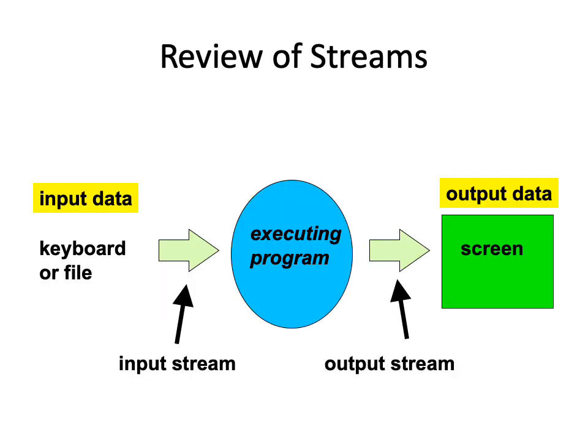Let's do some quick review of streams. Here we have the blue thing in the center as being your executing program, and data flows via the input stream from the keyboard to your program. That's via cin. As we'll learn later today, it can also flow from a file via another kind of input stream, a file input stream. The executing program can also be writing to cout via an output stream. Cout is an example of an output stream. You could also have an output file stream. The basic idea is that data flows from the program through the stream into the screen or a file.